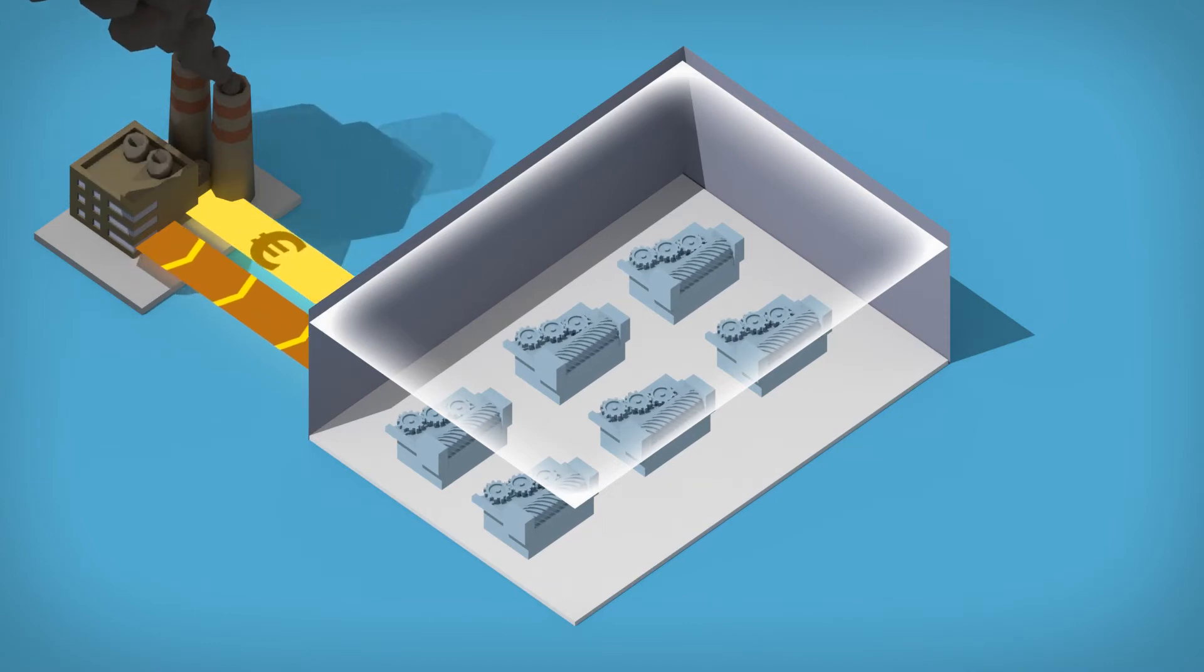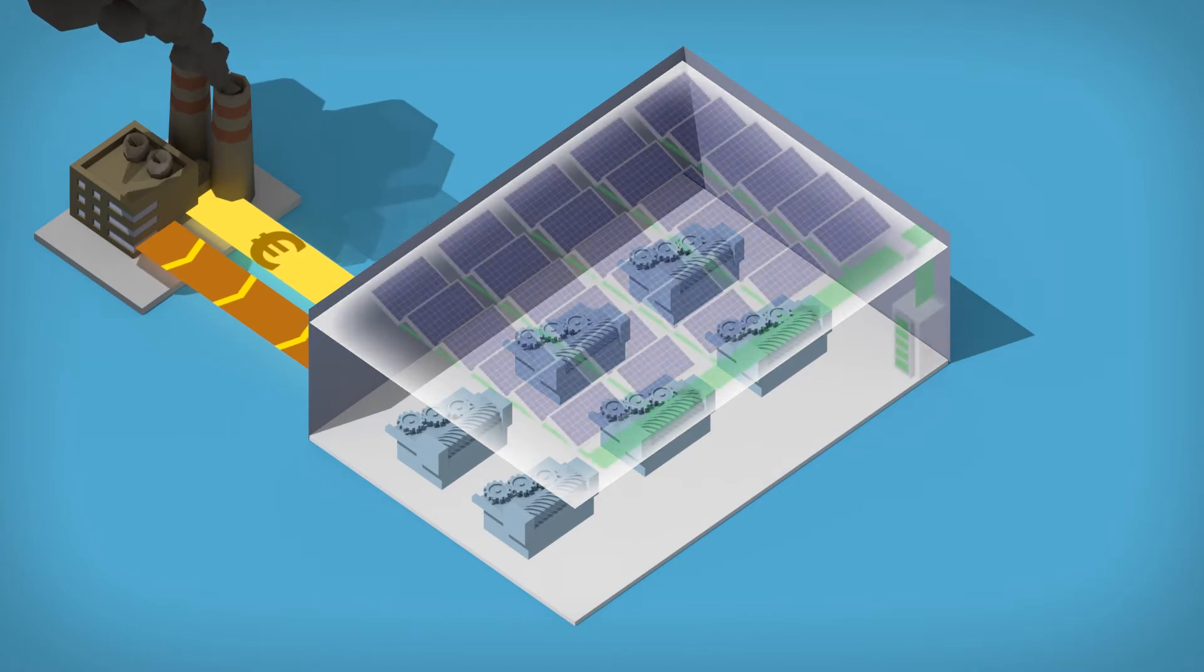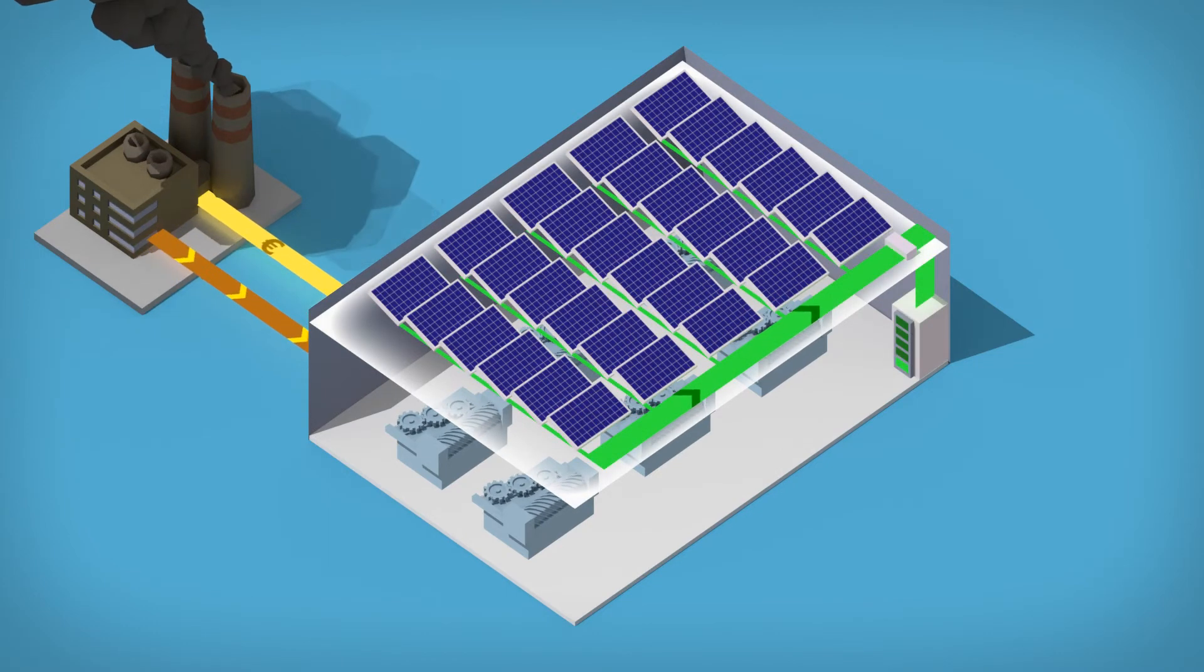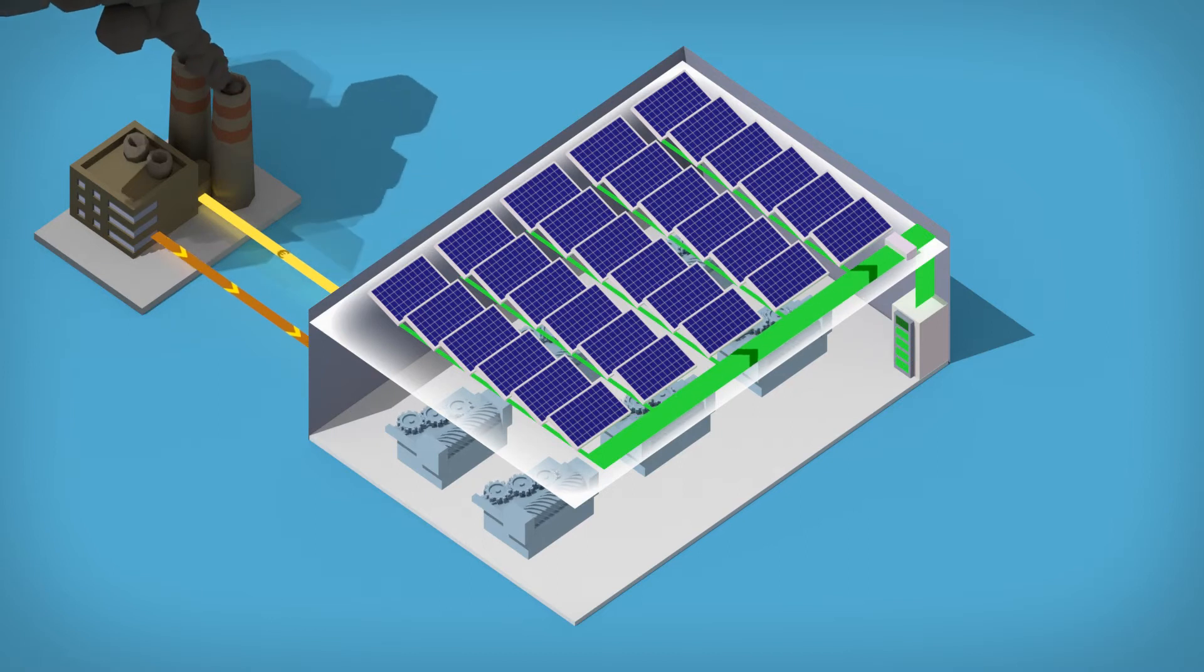This can quickly add thousands of euros to an electricity bill. Photovoltaic installations and storage units work well together. Combined, they can ensure that even in periods of particularly high demand, companies no longer have to buy so much electricity. A lower peak load means lower costs.